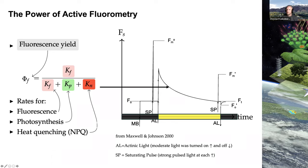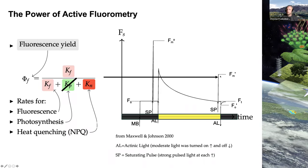From PAM measurements, we can't directly calculate NPQ or PS2 yield from space — we can only measure the FT signal times the absorbed light radiation in the PAR spectral range. The tricky part is relating measurements of this FT yield times PAR to stress conditions and potentially to photosynthesis. Moving on: how do we actually measure SIF from space or with any remote sensing instrument?